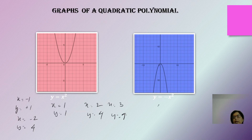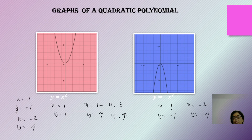For y = -x², if x = 1, y = -1; if x = -2, y = -4; if x = -3, y = -9. Whatever values of x you take, the y-values are all negative. The graph line will be symmetrical about the negative y-axis.